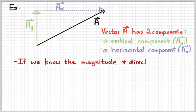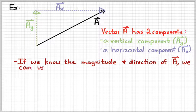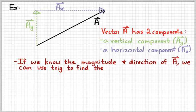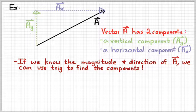So if we know how big A is and we know its direction then we can use some simple trig to figure out how big the components are. We already know what their direction is. Ay points up. Ax points to the right because the original vector A points up into the right. So let's see if we can put some numbers into this example.